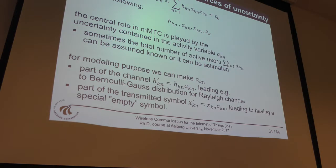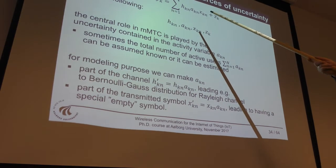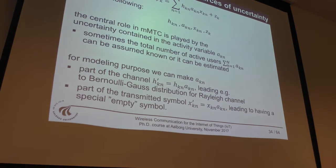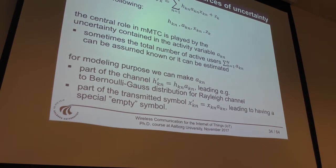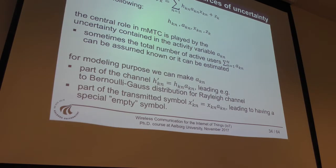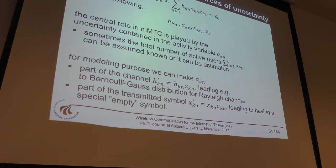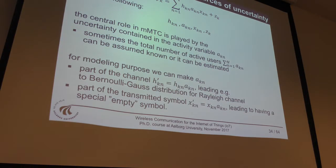Another choice is to make akn part of the symbol. You say: whenever I have nothing to transmit, I transmit a zero symbol or zero message; whenever I have something to transmit, I pick randomly and uniformly from M messages and transmit that. These are different modeling approaches for the same system.